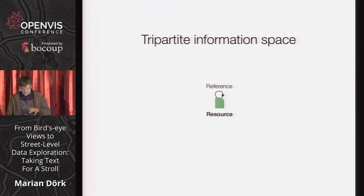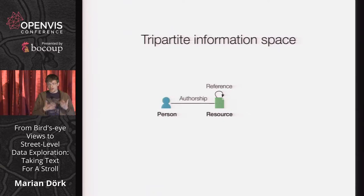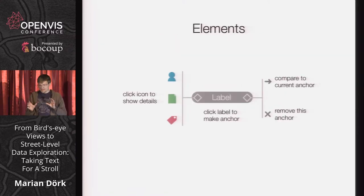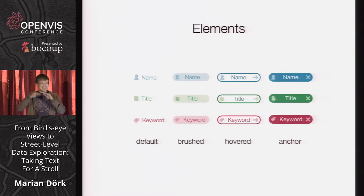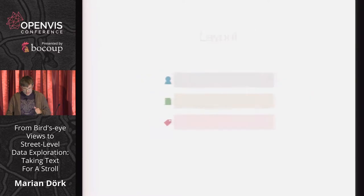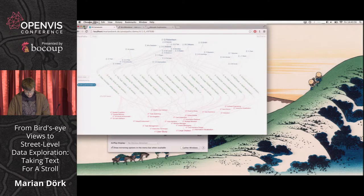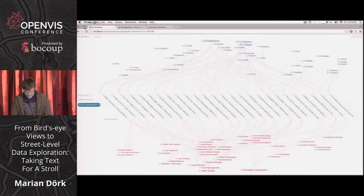We started by understanding the basics of that information space — a tripartite space that has the resources at the middle that can reference each other. Then there are people involved — the authors — and we have concepts such as keywords that portray the topicality of these resources. We designed basic elements for these different entity types with interactive capabilities, give them different visual states depending on how you interact with them, and arrange them in a three-band layout. The resources are in the middle, and there is text — that's important.